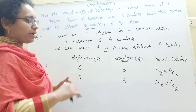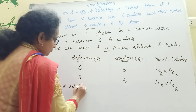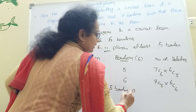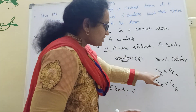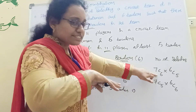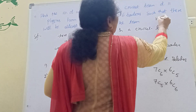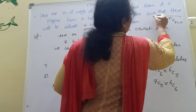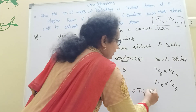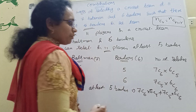Therefore, number of selecting at least 5 bowlers equals 7C6 into 6C5 plus 7C5 into 6C6. Applying the formula NCR = NC(N-R): 7C6 = 7C1 = 7, and 6C5 = 6C1 = 6, so 7 into 6 = 42. Then 7C5 = 7C2 = 7 into 6 divided by 2 into 1 = 21, and 6C6 = 1. So 21 into 1 = 21.